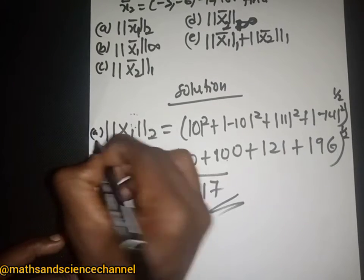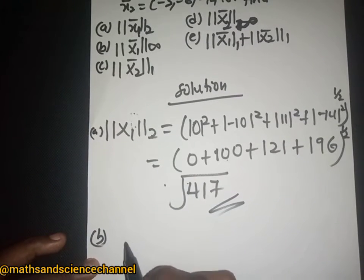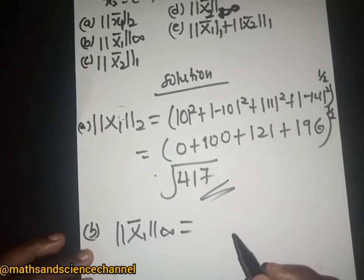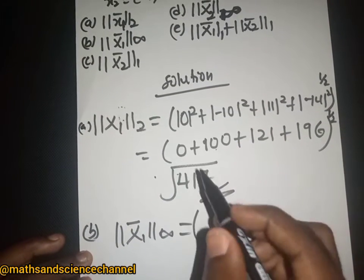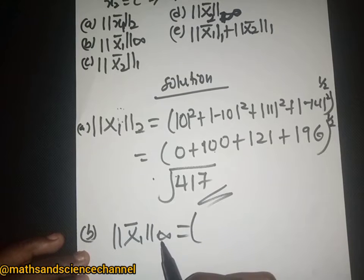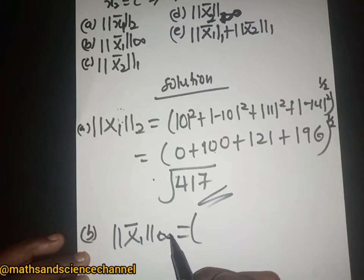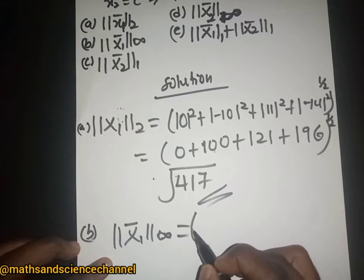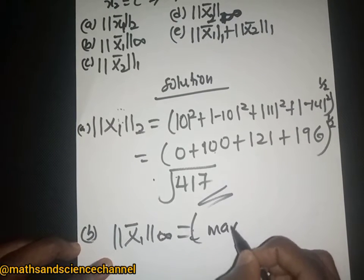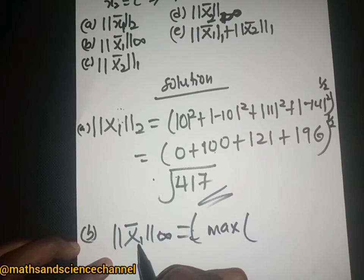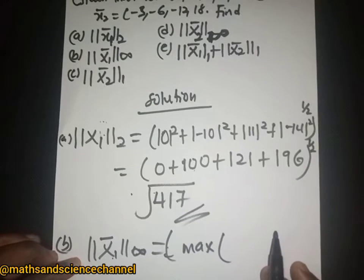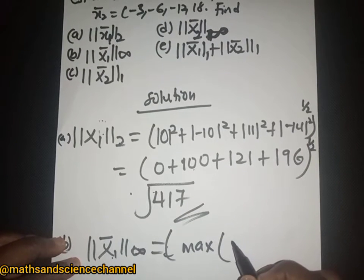That is part A. Now let's look at part B. In part B we are looking at the infinity norm of x1. For the infinity norm we are looking at the maximum of the absolute values of the components of x1.